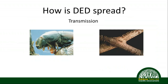Dutch elm disease spreads in two ways. One is via the European and the native elm bark beetle — these beetles feed on branches with fungal spores attached to them. The other way is via root grafts. Elms will often graft with one another, and closely planted elm-lined streets created perfect conditions for Dutch elm disease to spread from one tree to the next through these underground root grafts connecting the root systems of adjacent elm trees.